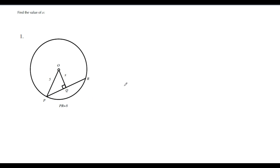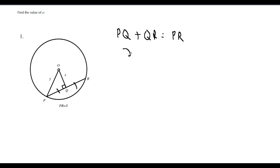First: PQ plus QR equals PR. From our previous theorem these sides are equal, so we write 2PQ equals PR equals 8. Dividing by 2 gives PQ equals 4. So we label this side as 4, and now we can determine x using Pythagoras.